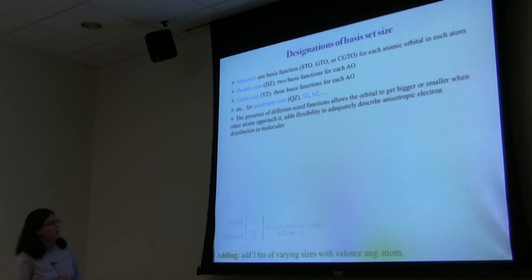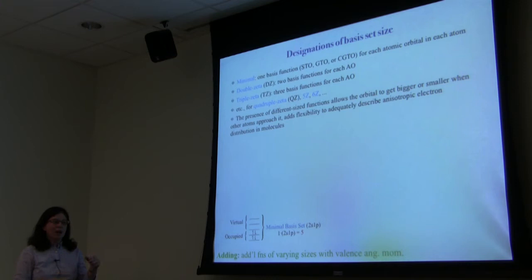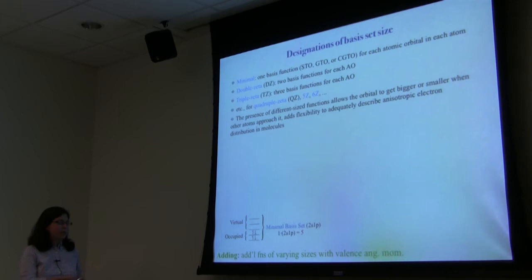We need a convenient way to refer to the size of a basis set. A minimal basis set — for beryllium: 1s, 2s, and a set of 2p — gives two sets of s orbitals and one set of p orbitals, for five orbitals total. With four electrons, four go into two occupied orbitals and the remaining three are virtual. This is a minimal basis set: one basis function for each atomic orbital on each atom.